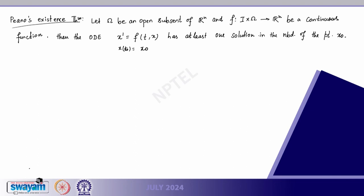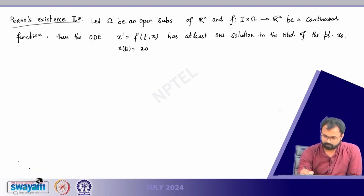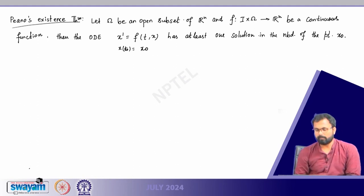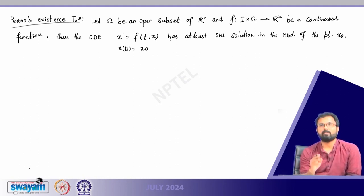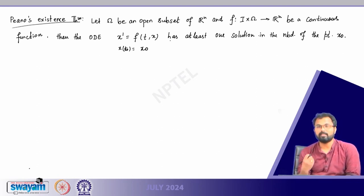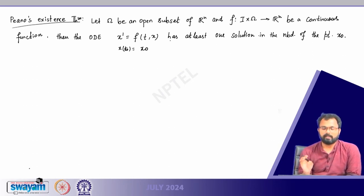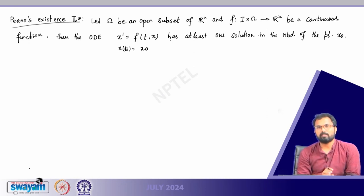This is the very classical theorem for the existence of solution of a first order ordinary differential equation. It basically requires only the continuity of the right hand side. If the right hand side is continuous, then at least we can say there is one solution. It does not talk about the uniqueness of the solution — this theorem only tells us that the solution exists.